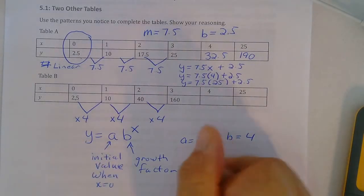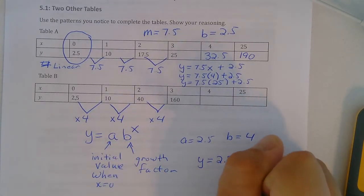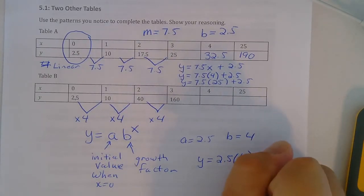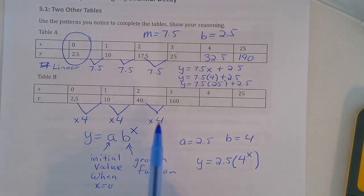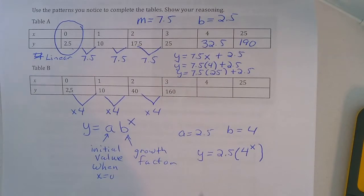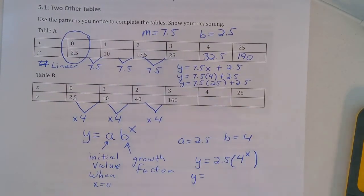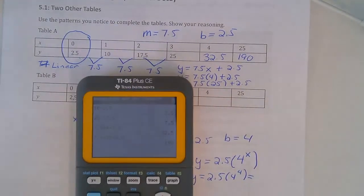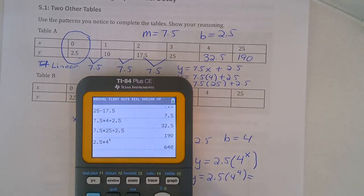So my overall equation then would be y equals 2.5, and I'm going to put parentheses for times, you could put a dot, so times 4 and then I'm going to put to the x power. You could put it on the inside or the outside of the parentheses. And now what I'm going to do is substitute 4 in for x and then substitute 25 in for x. So y equals 2.5 times 4 to the 4th, which gives us 640.